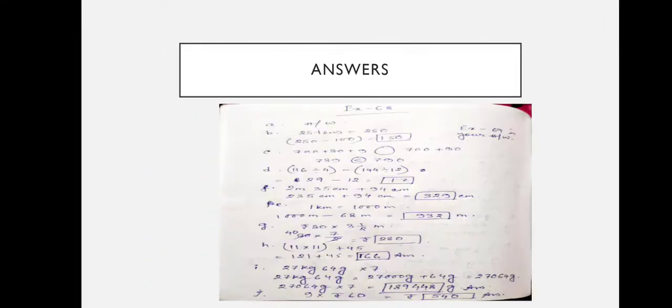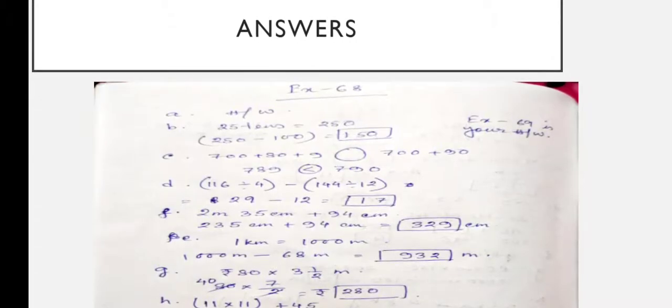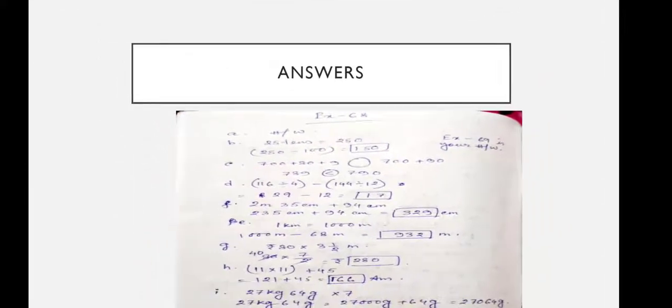Here a simplification is given — we need to divide and then subtract. The process is shown: dividing gives 29, and 29 minus 12 is equal to 17. Number E: 1 km equals 1000 meters, so 1000 meters minus 68 meters is equal to 932 meters.